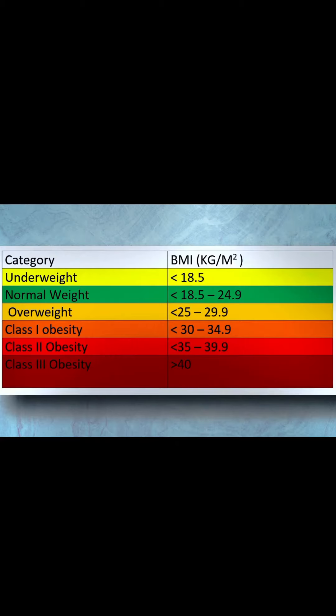The World Health Organization categorizes people in six different categories. The first category is people with a BMI less than 18.5 — those people are underweight.